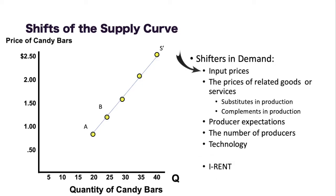Looking first at input prices — input prices is anything that goes into producing your goods. So if we're going to be hamburger producers, inputs would be things like pickles, tomatoes, lettuce, hamburger buns, and of course the beef. If the price of any of those goes up, we would shift our supply to the left. If the price goes down, we would shift our supply to the right.